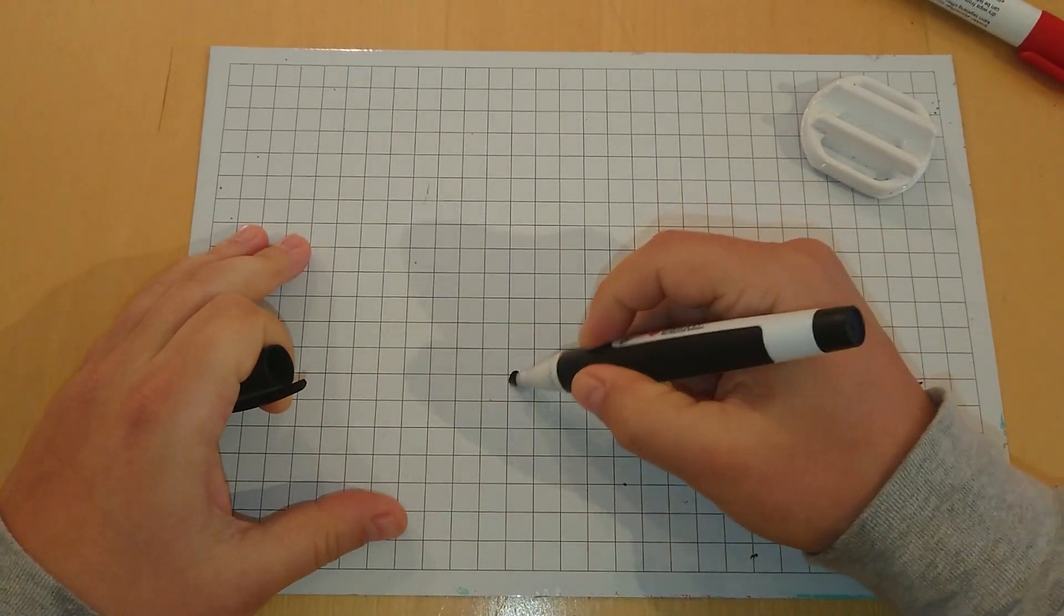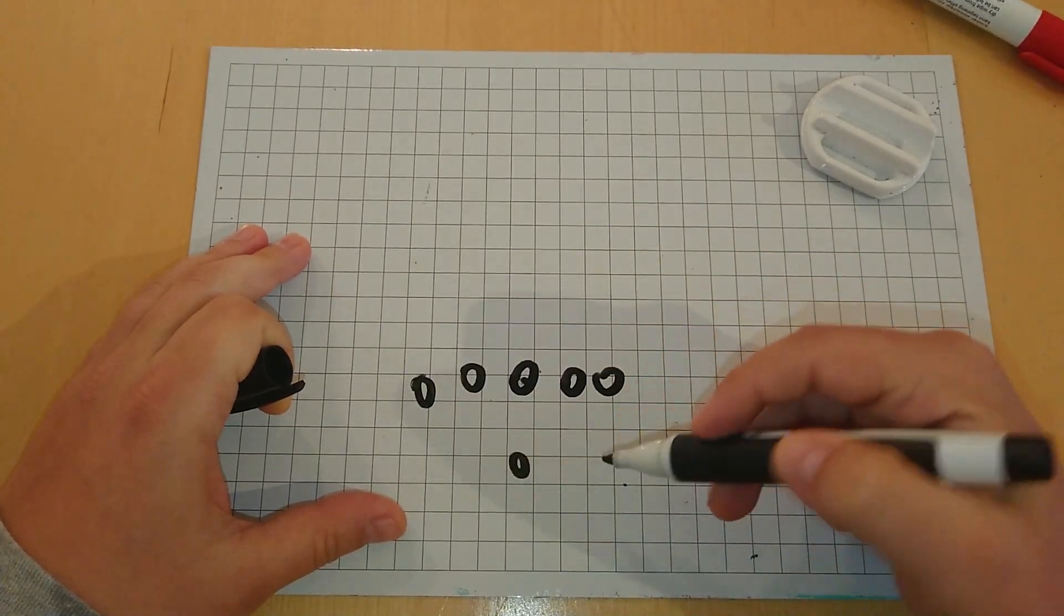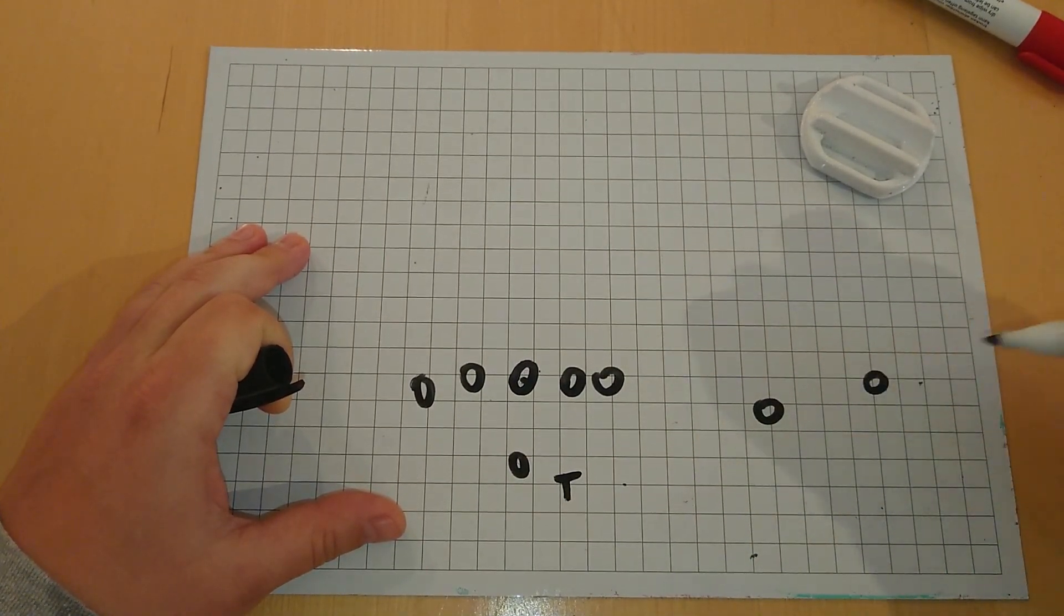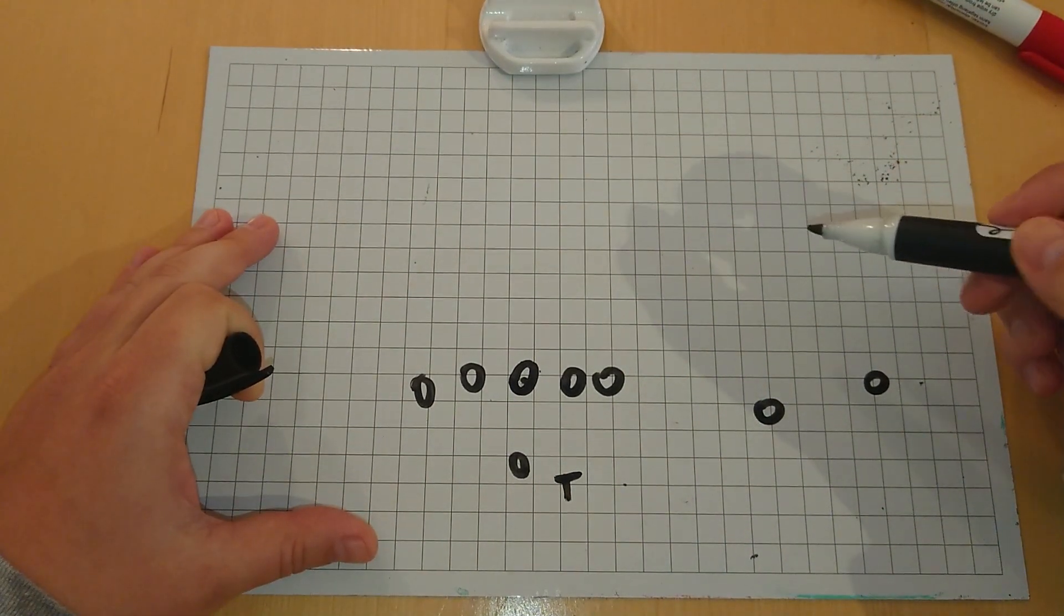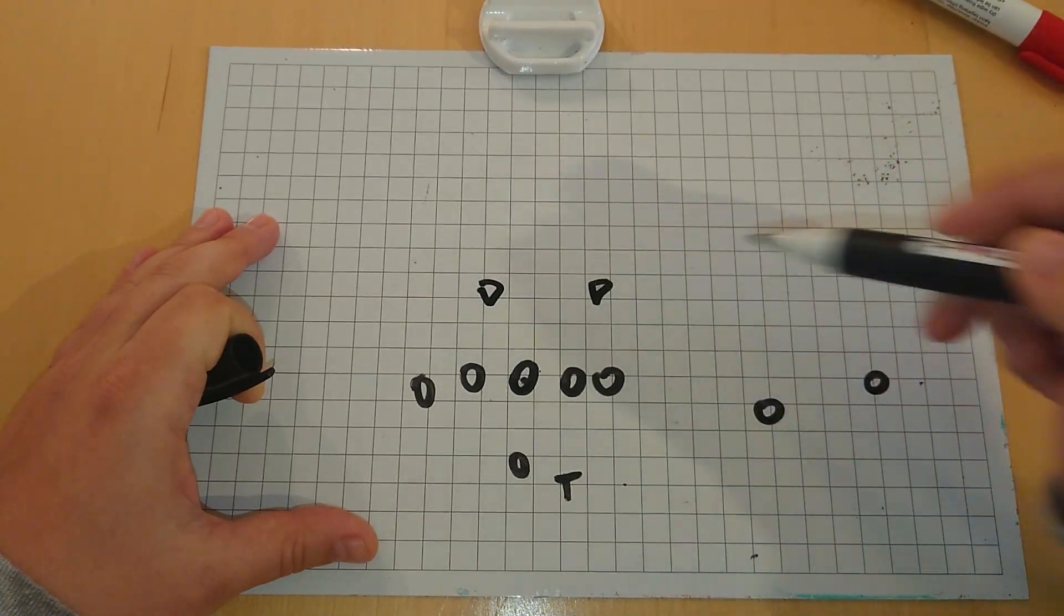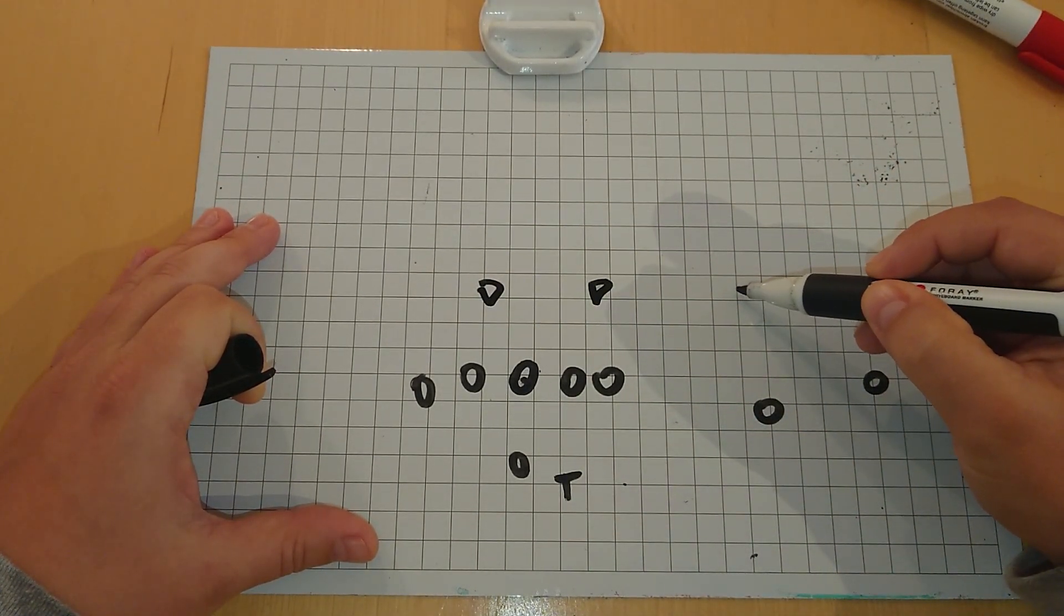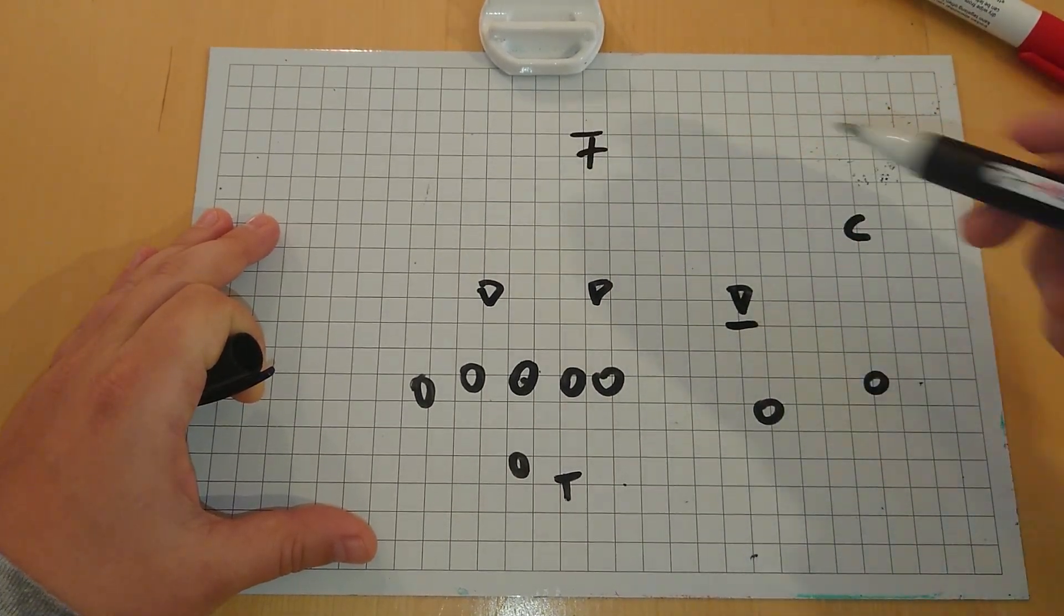When do I like to use double stops? I like to use it especially versus cover three defenses where we have two linebackers in the box and outside linebacker right here, a cornerback off and a free safety off.